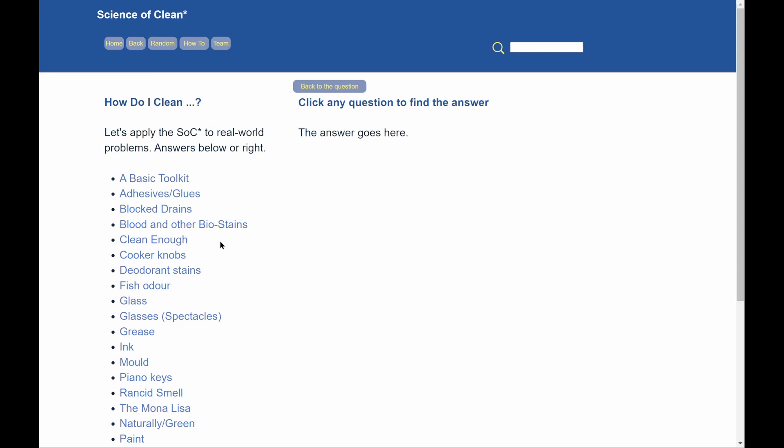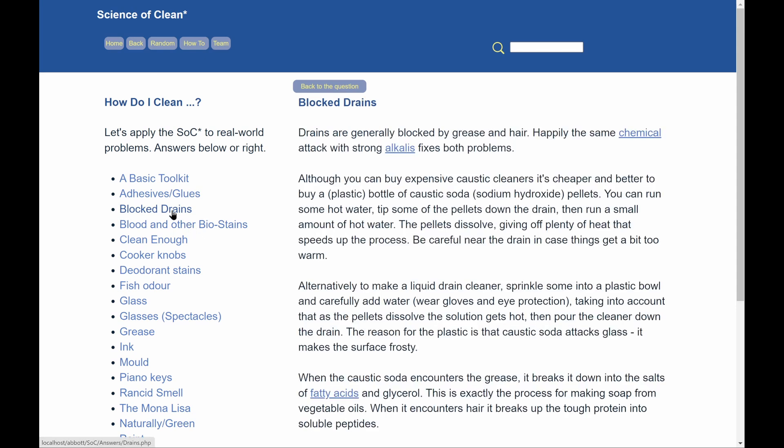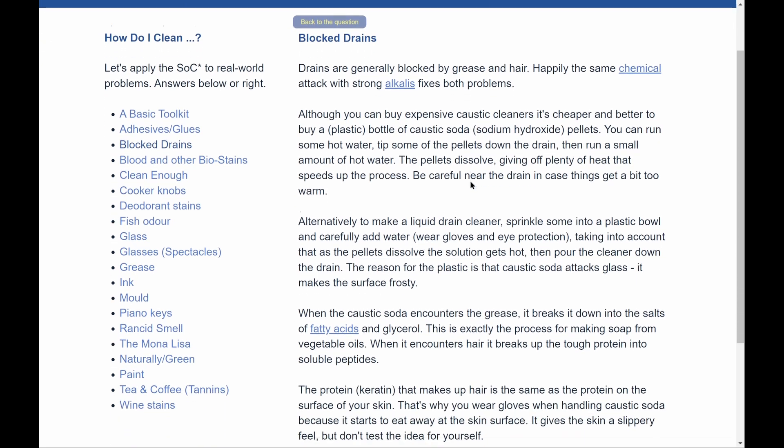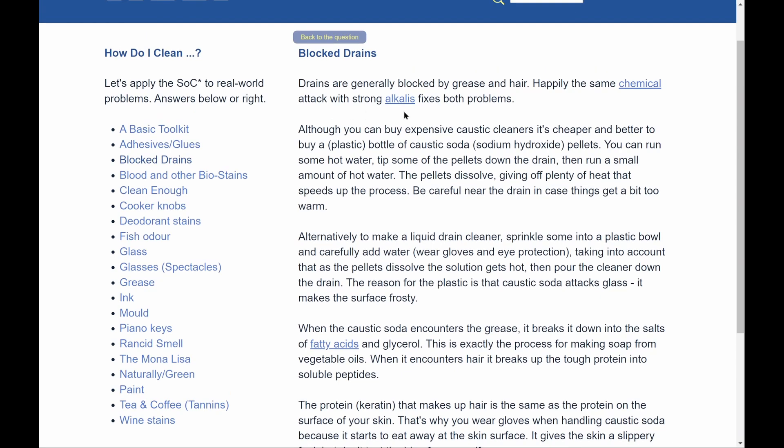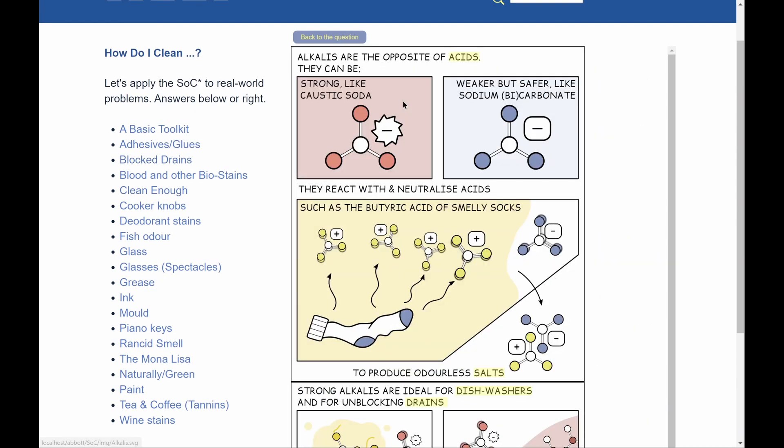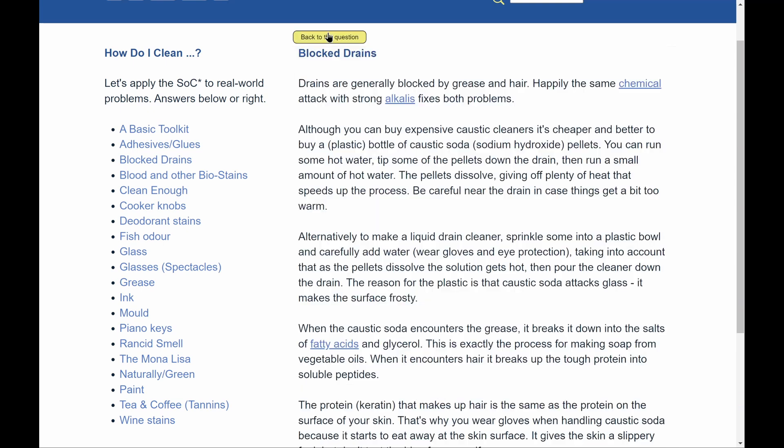And suppose I want to know the best way to get rid of blocked drains. Well, I click on blocked drains. And here's an explanation in text. So how to do it. But at any time it tells you about strong alkalis, you click and the picture appears. So you get a visual explanation. And then you can go back to the question and read on more. So it's a great way to work out how to do something.